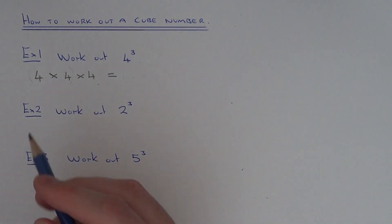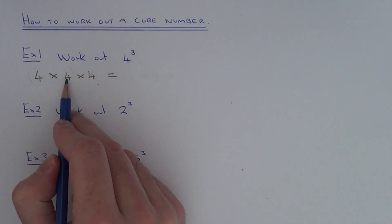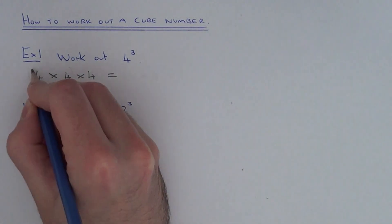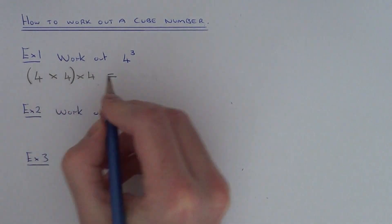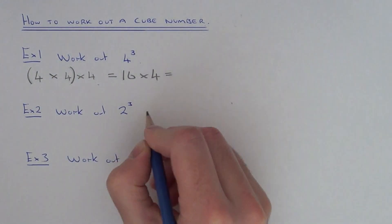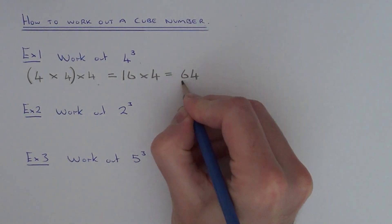So what we need to work out first of all then is 4 times 4, this gives you 16, and then we need to times this answer by 4. So 16 times 4 is 64.